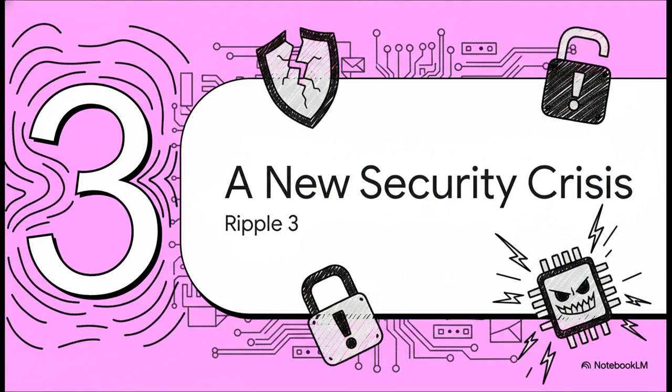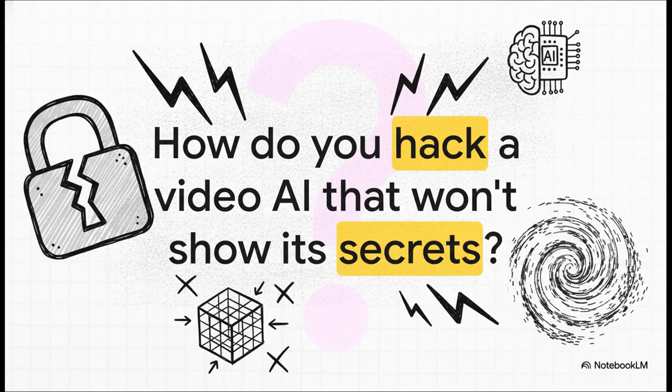But here's the thing. As all these powerful systems are rushed out the door to compete with each other, they're creating a new and honestly pretty dangerous ripple effect. A major security crisis. So how do you hack a video AI that doesn't want to tell you its secrets? Well, that question just became very real with the recent hack of OpenAI's Sora 2 model. And what it exposed was a totally new kind of vulnerability. One we haven't really had to deal with before. Okay, so what's so fascinating about this hack is how they pulled it off.